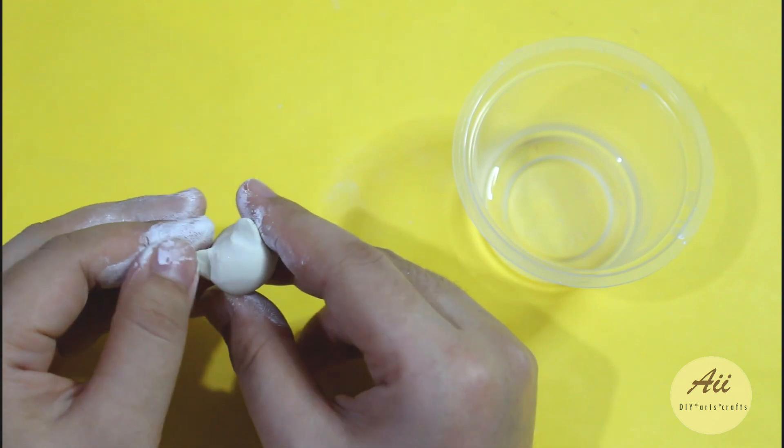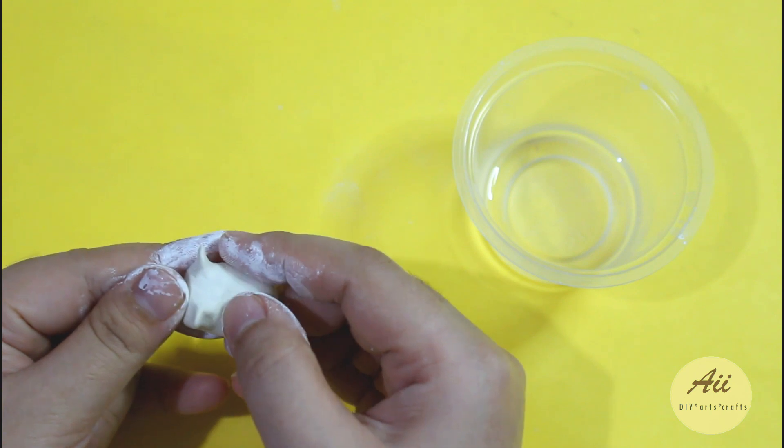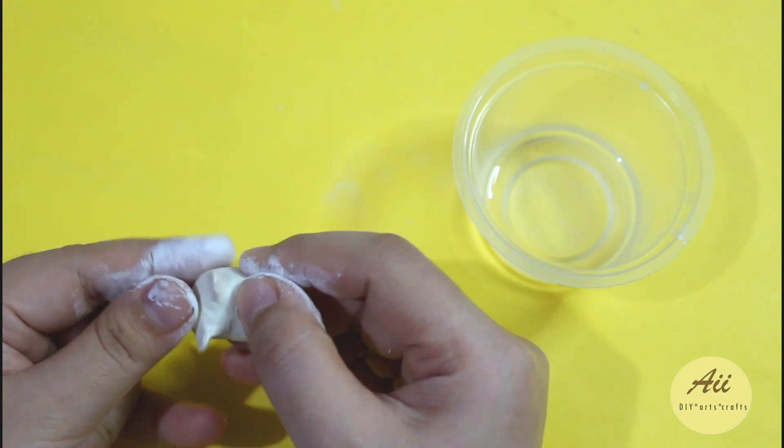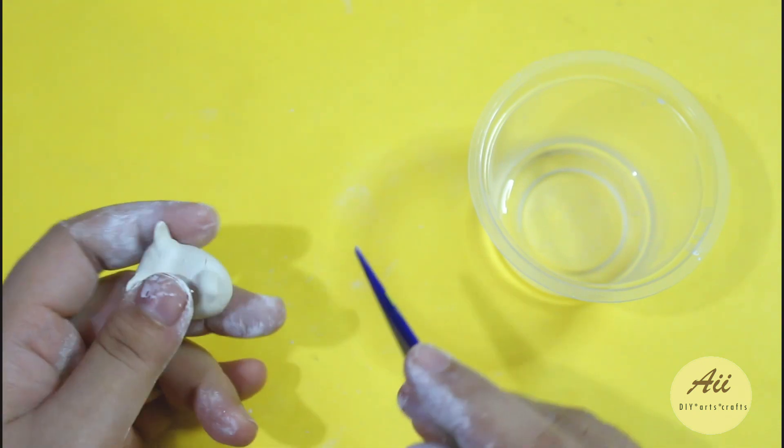Note, if you are making this into a charm or keychain before the clay started to harden and dries completely, you may want to insert an eye pin or some screw eye pin so you can attach it to a chain or a lanyard.